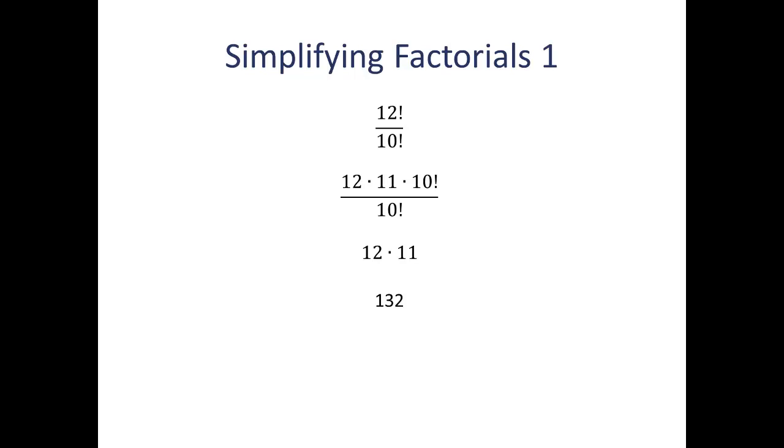So the key to this kind of simplification is looking at the smaller factorial, 10 factorial in this case, and rewriting the bigger factorial as the smaller factorial times some numbers.